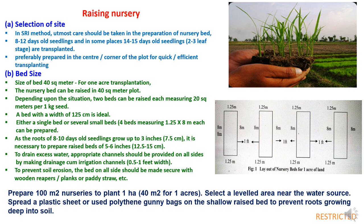During raising nursery, we have to prepare 100 square meter per hectare or 40 square meter per acre, selecting a leveled area near the water source. Spread a plastic sheet or use polythene gunny bags on the raised bed to prevent roots from growing too deep into the soil, because we are using younger seedlings — if the roots go too deep, they may be damaged during uprooting at transplanting.